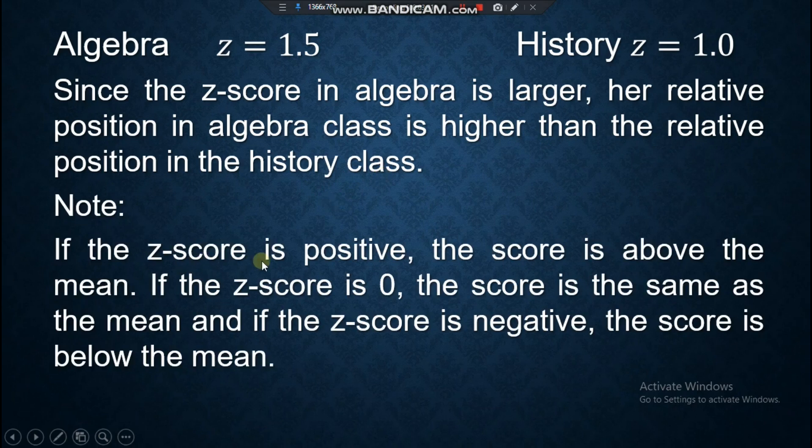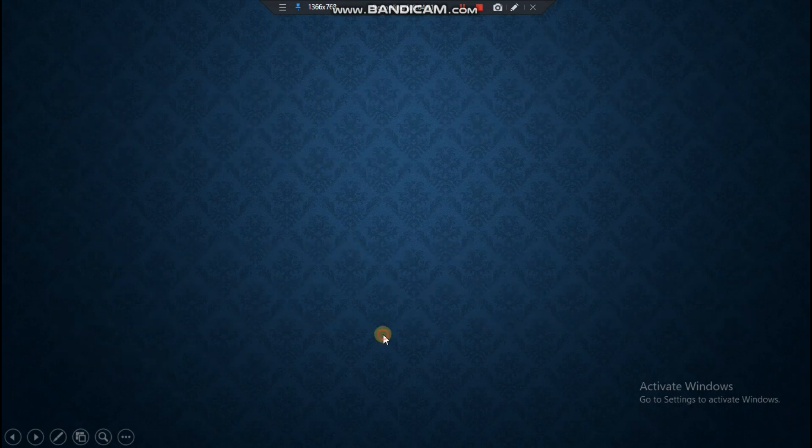Note: if the Z-score is positive, the score is above the mean. These are positive, so it's above the mean. If the Z-score is 0, the score is the same as the mean. If the Z-score is negative, the score is below the mean.